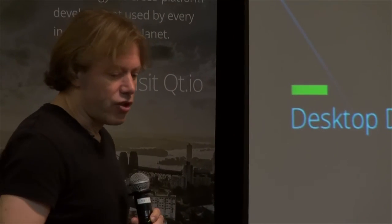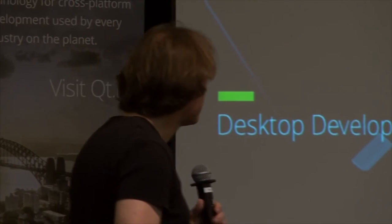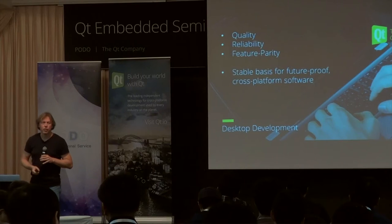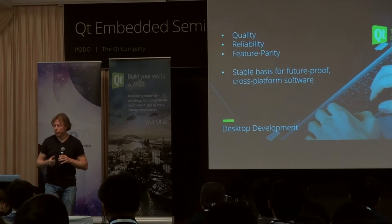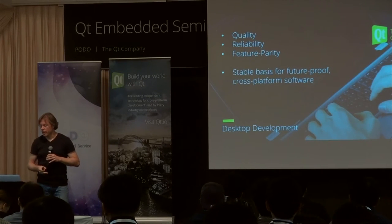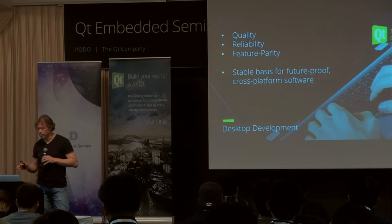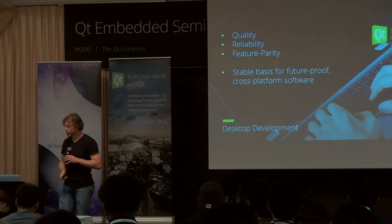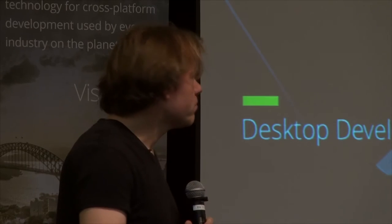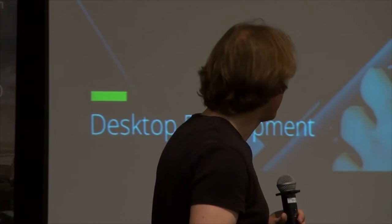On the application development side, where Qt traditionally came from — the first releases were on desktop operating systems — our focus is really on quality, making things polished, on reliability, and on feature parity between the different platforms. We want to make sure all features work the same way on all the different platforms and operating systems we support. For the upcoming Qt 5.6 release, a big part of the work is on polishing, bug fixing, quality improvements, better performance, less memory consumption, and better compliance with new OS releases.